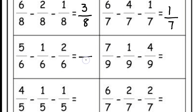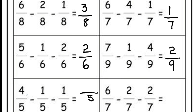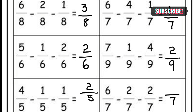The next answer: 5 minus 1 is 4, and 4 minus 2 is 2, giving 2 by 6. The next answer is 2 by 9 — only the numerators are being subtracted. The next answer: 4 minus 1 minus 1 equals 2, giving 2 by 5. And the final answer: denominator is 7, numerators 6 minus 2 minus 2 equals 2, so 2 by 7 is the answer.